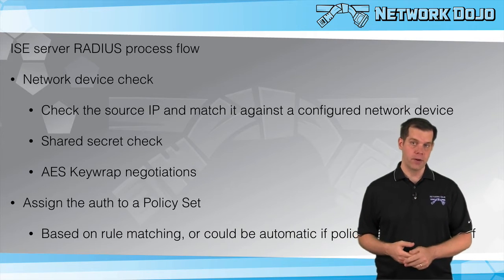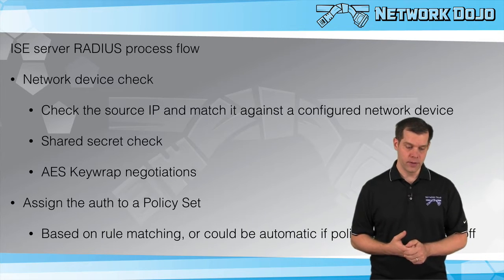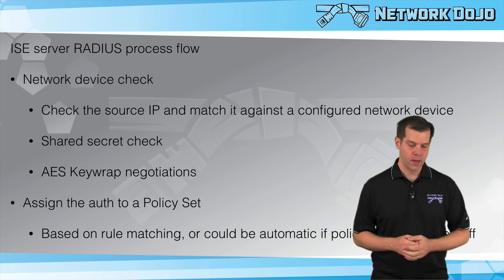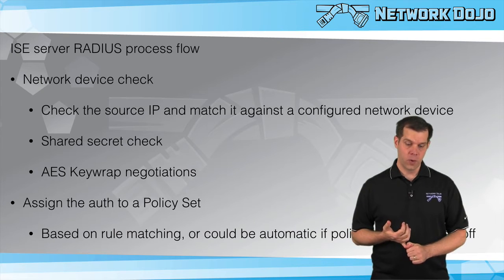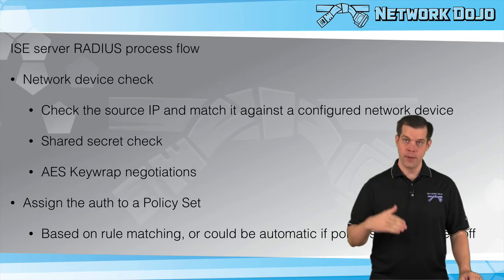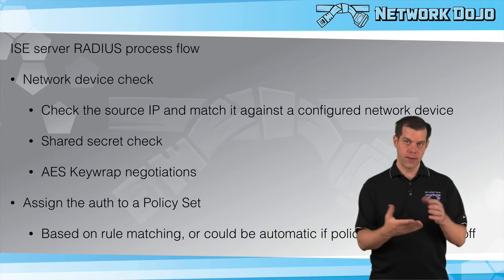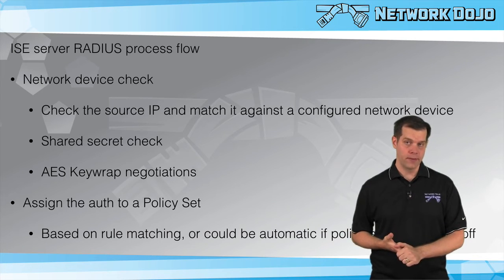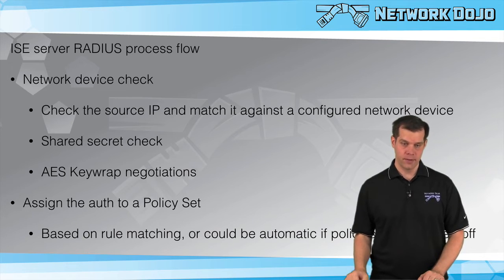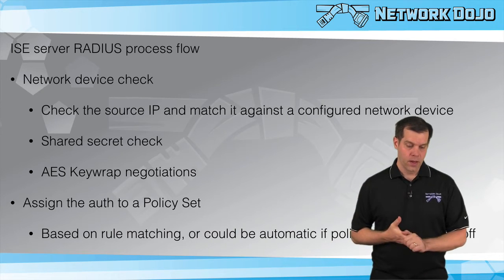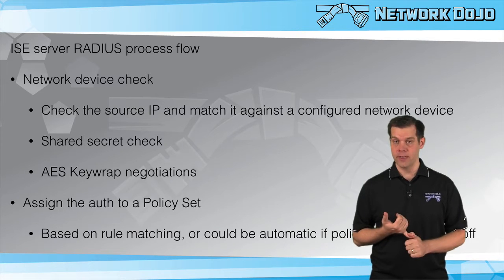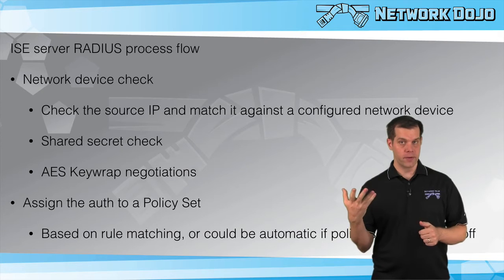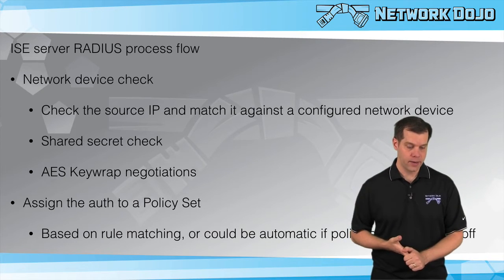Before we even process the request, we need to validate that authenticator — that network device attempting to talk to ISE — because we won't let just anyone do it. We need a pre-configured network device that matches the actual authenticator talking to us. So the network device check asks: is this a legitimate client? We look at the source IP address of the RADIUS request and match that to a configured network device, since every network device will have one or more IPs assigned to it.